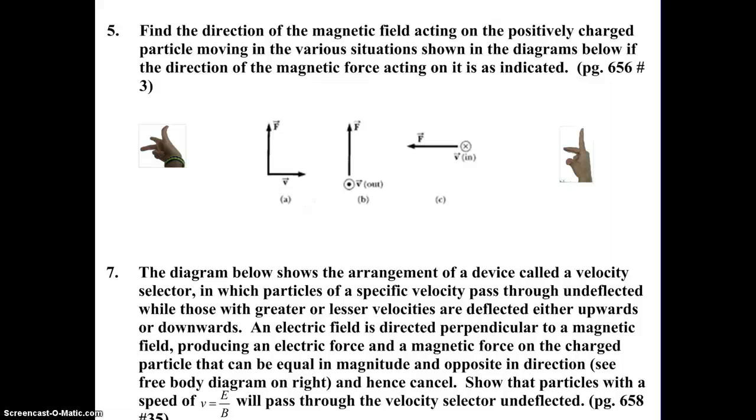Welcome to the solutions for the AP electromagnetism problem set numbers 5 and 7. Let's start with number 5 here.